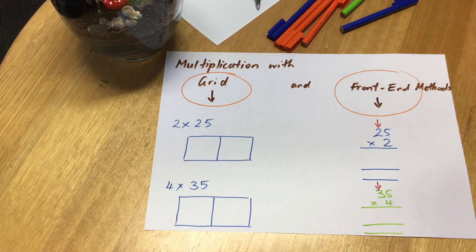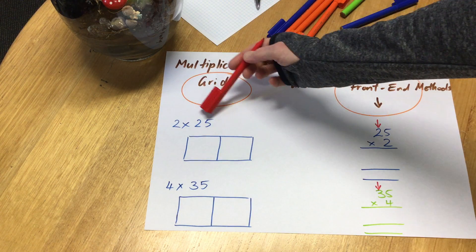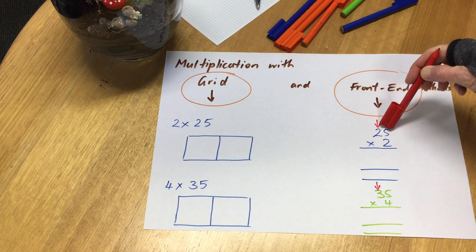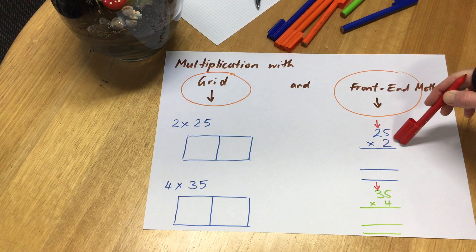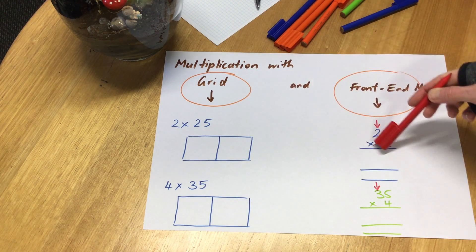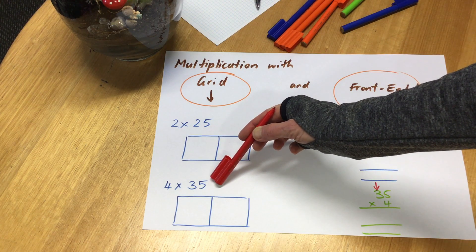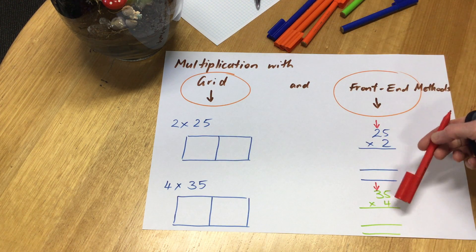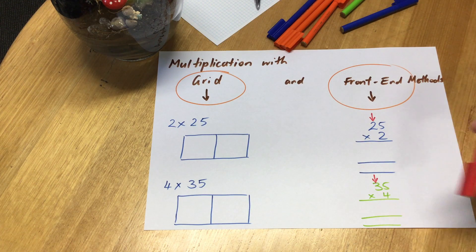Let's have a look at the grid method first. What I've set up is a sum, 2 times 25, and I've got it over here too, 25 times 2, for the front-end method. Then we'll look at 4 times 35, which I've got over here too, 35 times 4.